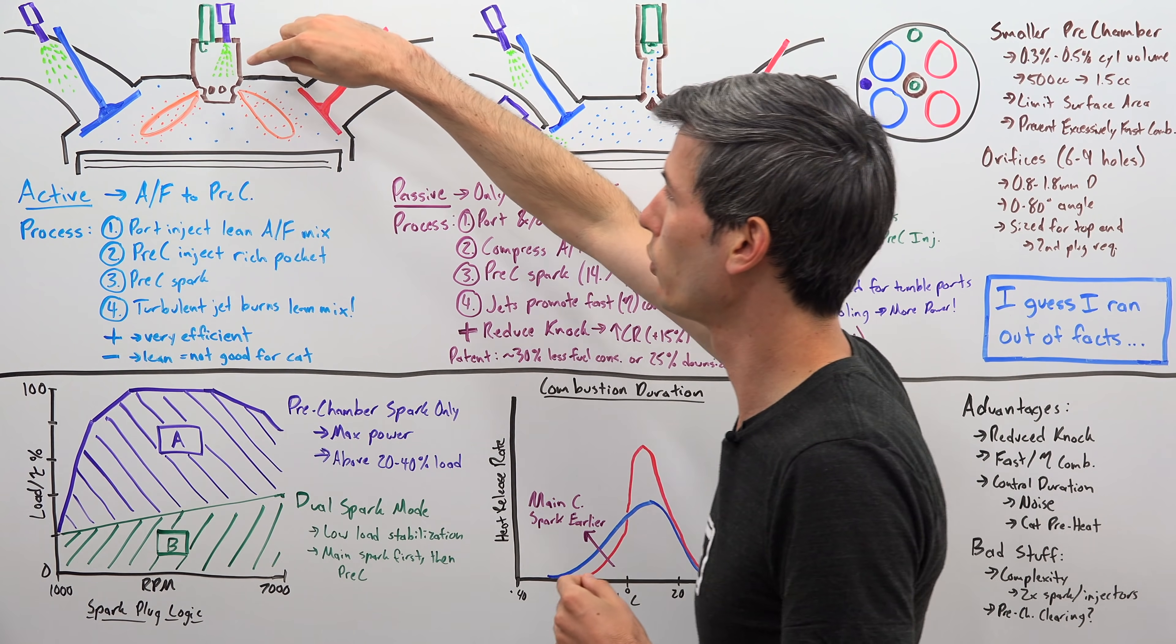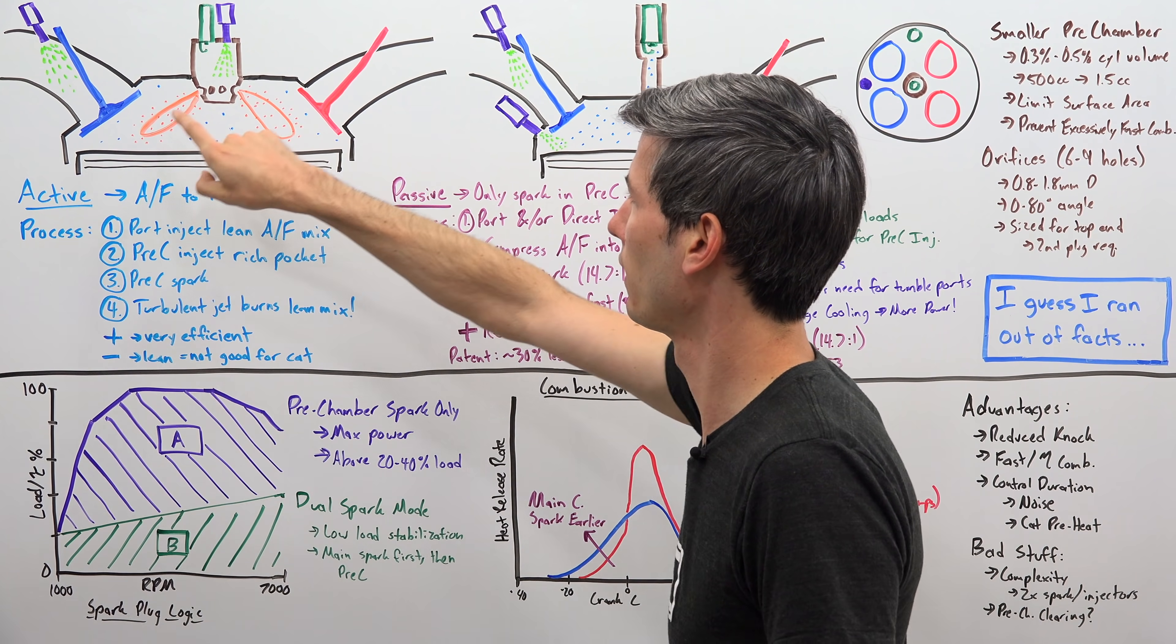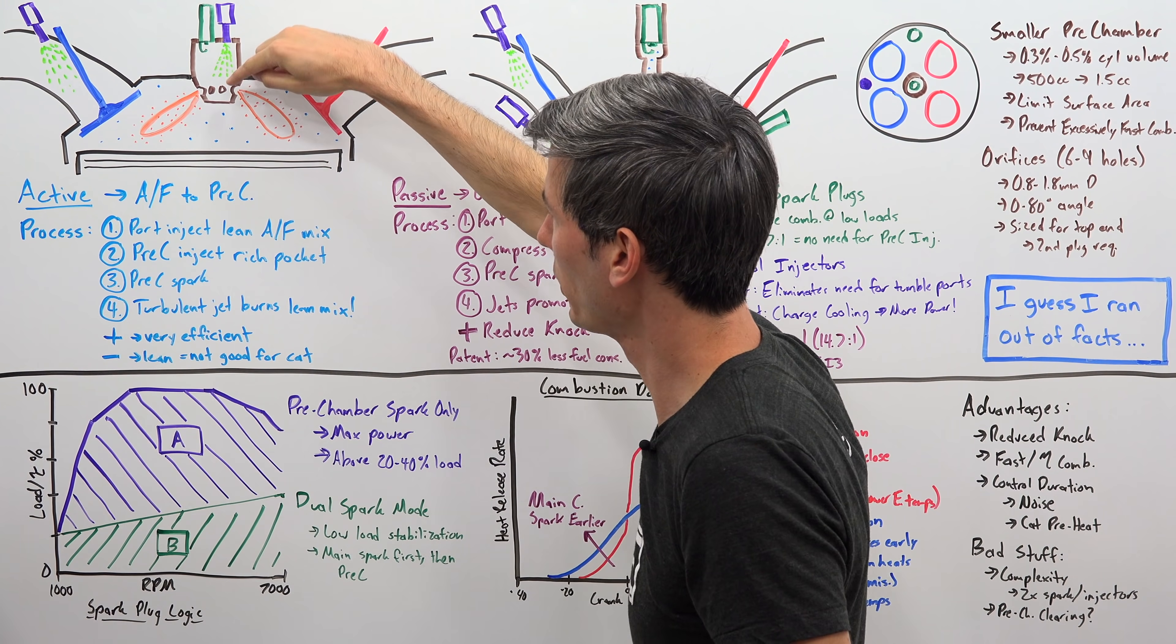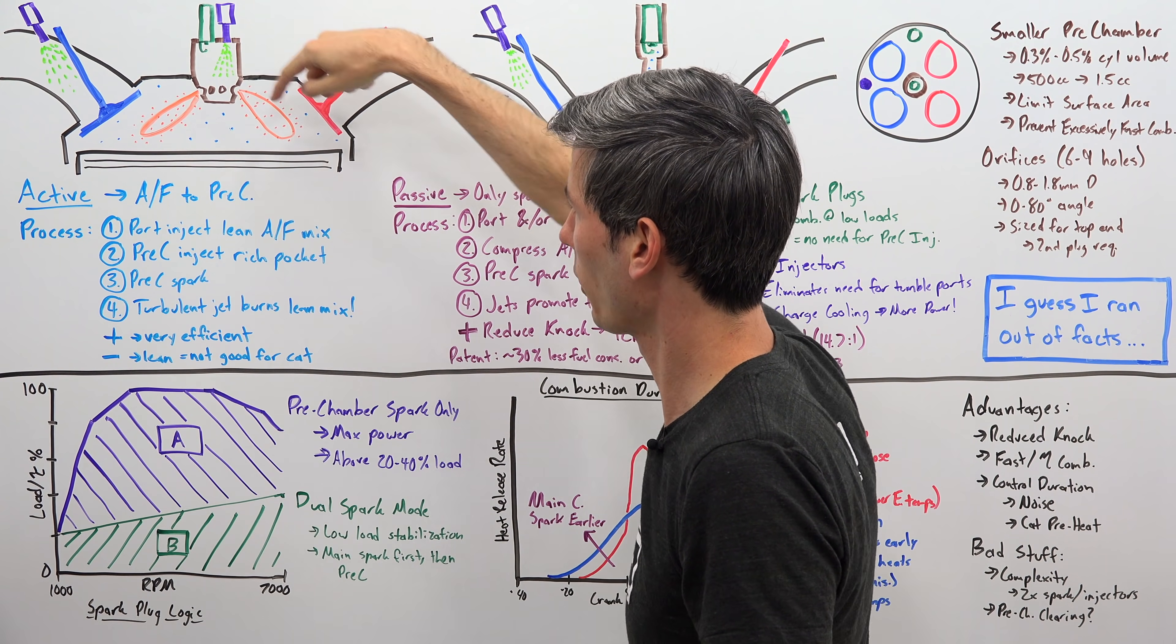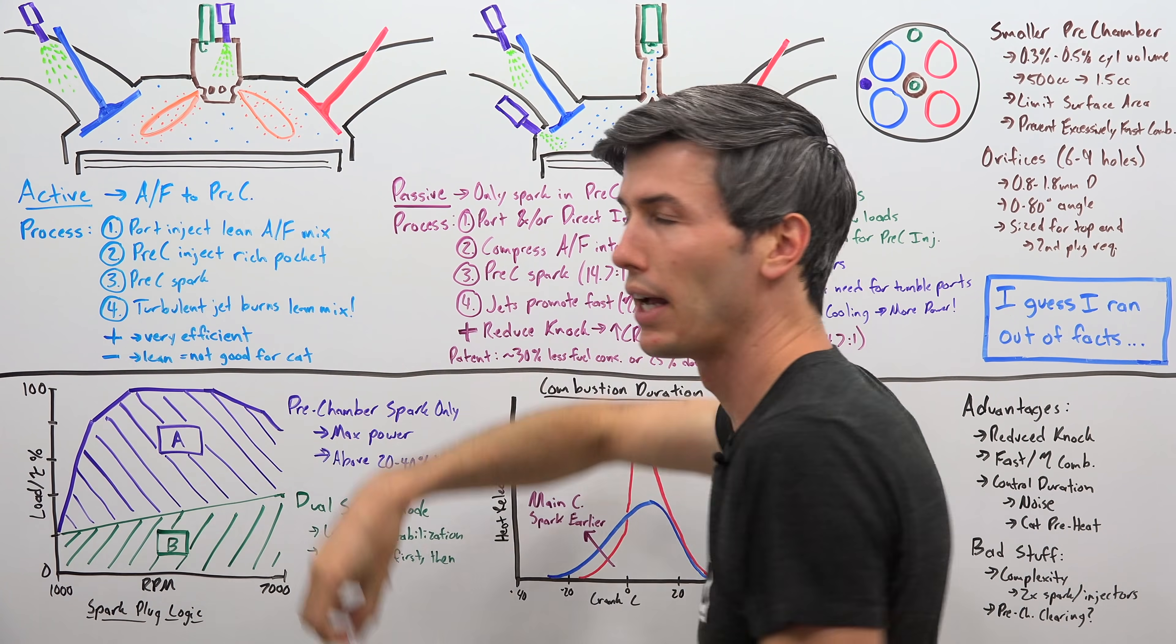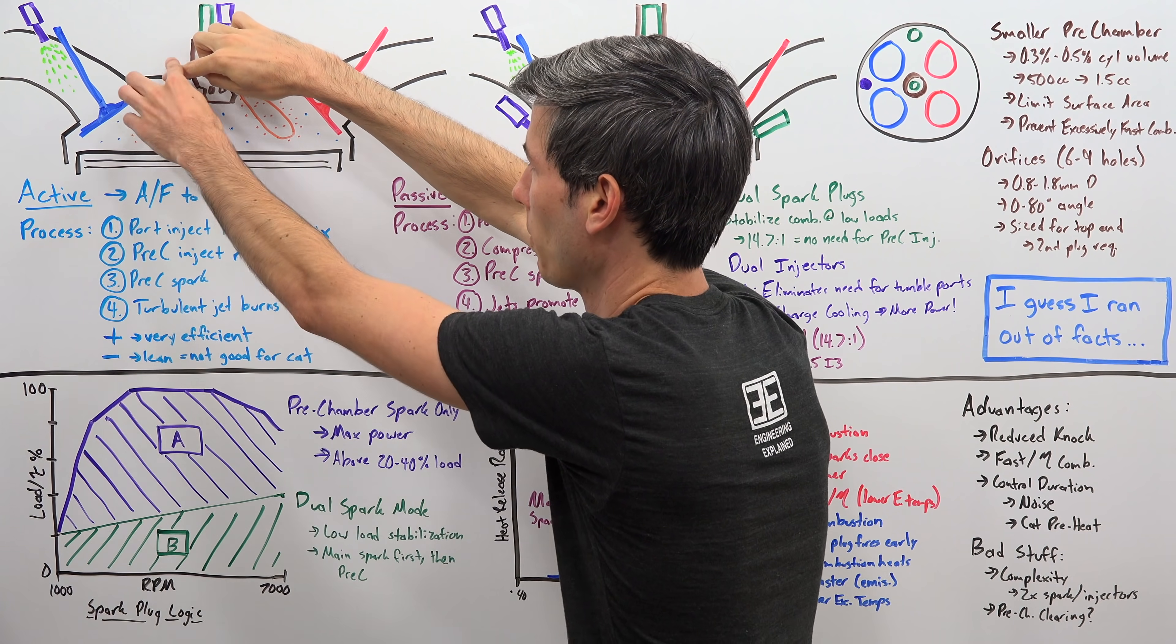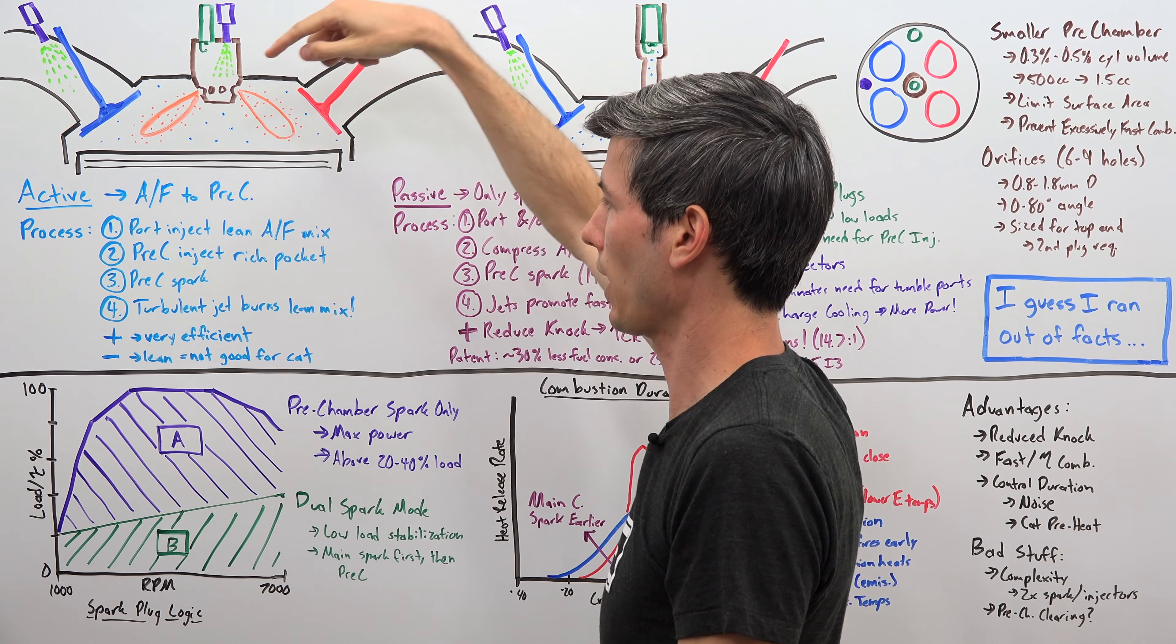So now what you've done is you've created a rich air-fuel pocket in this pre-chamber, and then you have a very lean air-fuel ratio in the main chamber. And so you use the spark plug to ignite that air-fuel mixture, and what it does is it creates these turbulent jets. The pre-chamber has these little ports at the bottom of it, so that combustion comes spewing out in these turbulent jets, and because it expands over this wide area of the main chamber, it's able to actually burn off that lean air-fuel mixture.